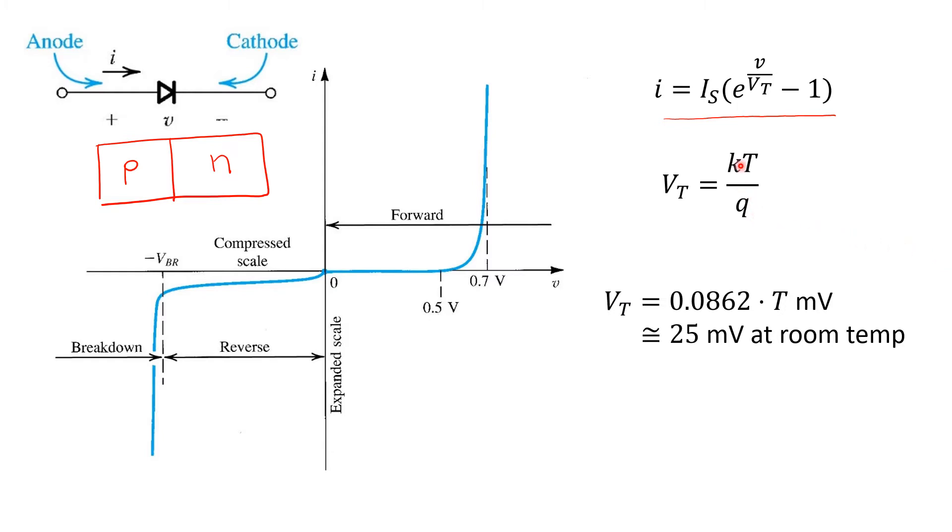Substituting in the values of these constants gives us a relationship between thermal voltage and absolute temperature shown here. If we consider room temperature, we find that the thermal voltage is about 25 millivolts, which is a nice round number that's useful to keep in mind.